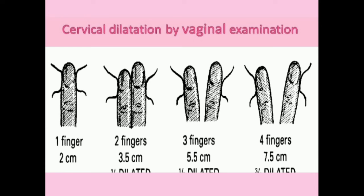Dilation primarily occurs during active labor and is very important for defining what stage mom is in. Roughly: two centimeters dilation is about one finger width in diameter; two fingers is about 3.5 cm; three fingers is about 5.5 cm; four fingers is about 7.5 cm. The key thing to know is that 10 centimeters dilation marks the beginning of the second stage of labor.